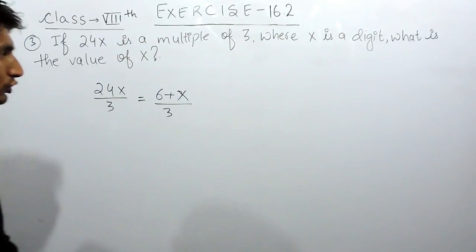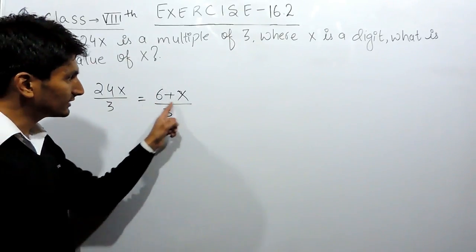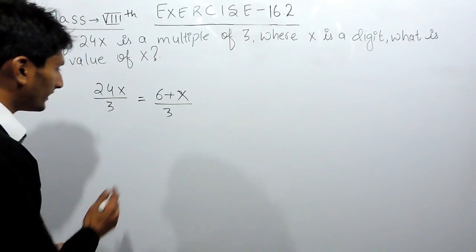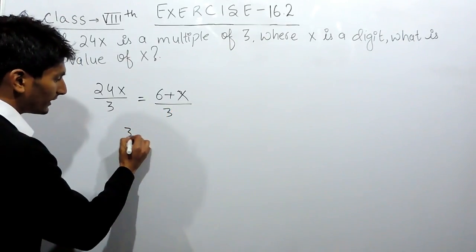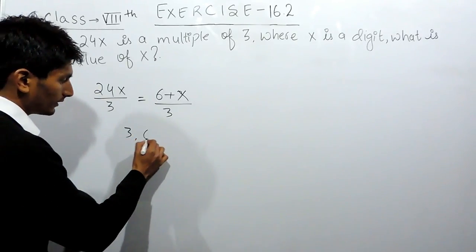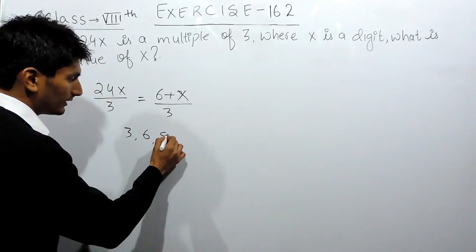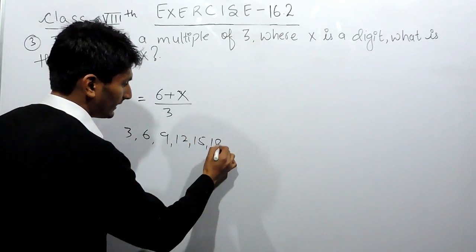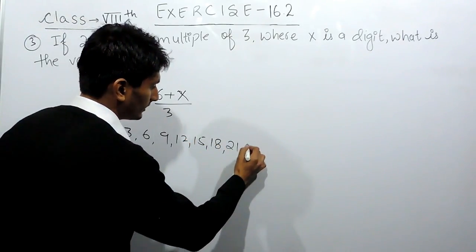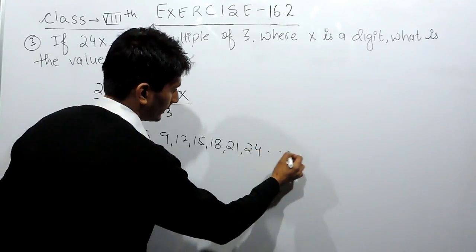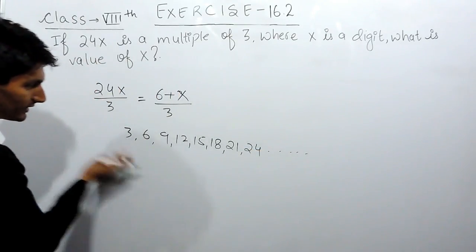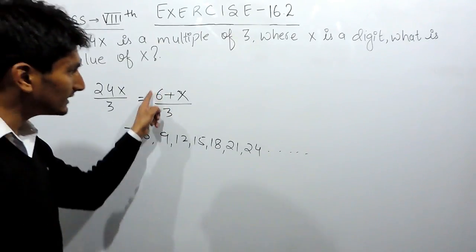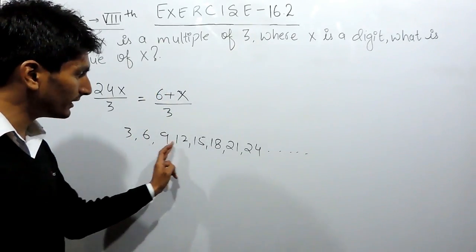Now we check whether the sum of digits is divisible by 3. The numbers divisible by 3 are 3, 6, 9, 12, 15, 18, 21, 24, and so on. I have to make this sum equal to one of these numbers so that the complete number will be divisible by 3.